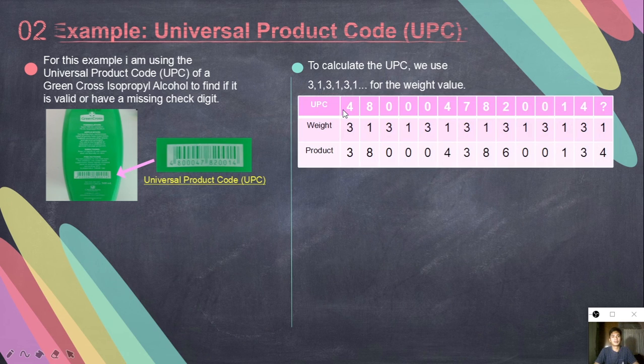The upper part shows the UPC which is 4800004782001. On the last part, I am using a question mark for the digit which we will find later. The same procedure as the first and second examples but in this case, we use 3131 for the weight values.